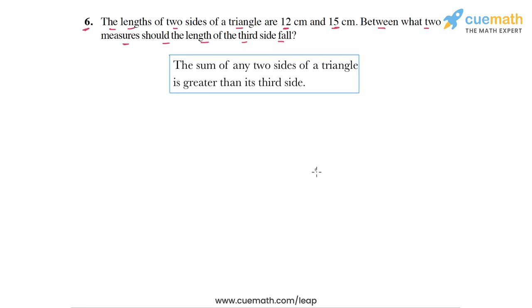Coming back to our question, let's write our answer. BC can go up to as high as 12 centimeters plus 15 centimeters, but it must always stay less than the sum.